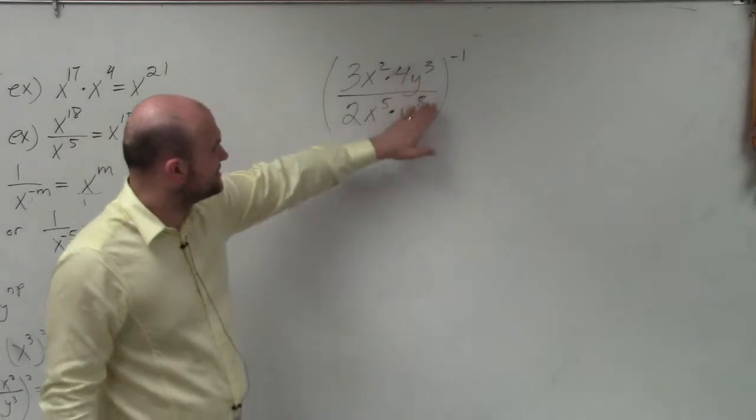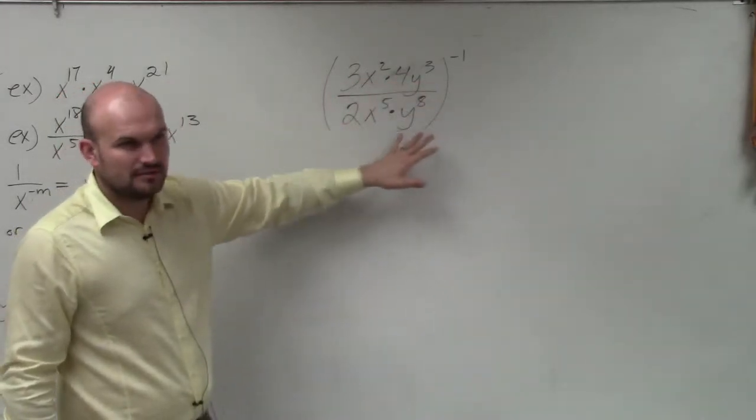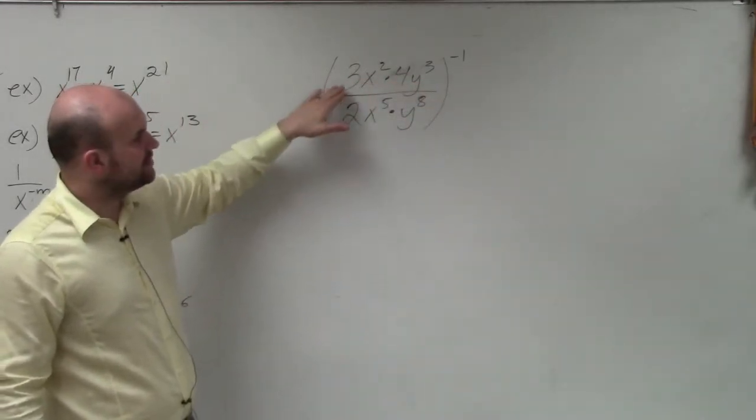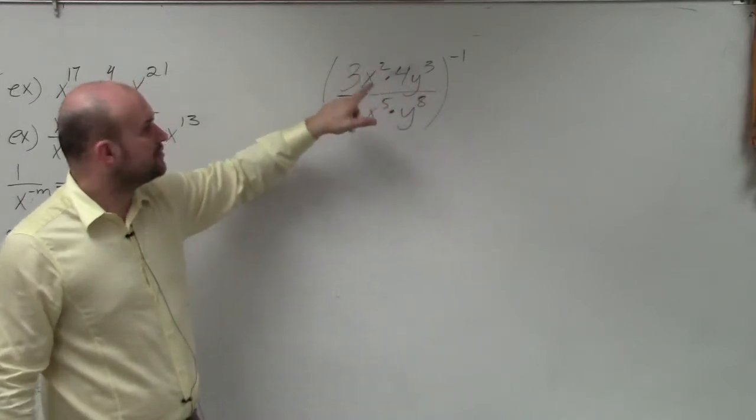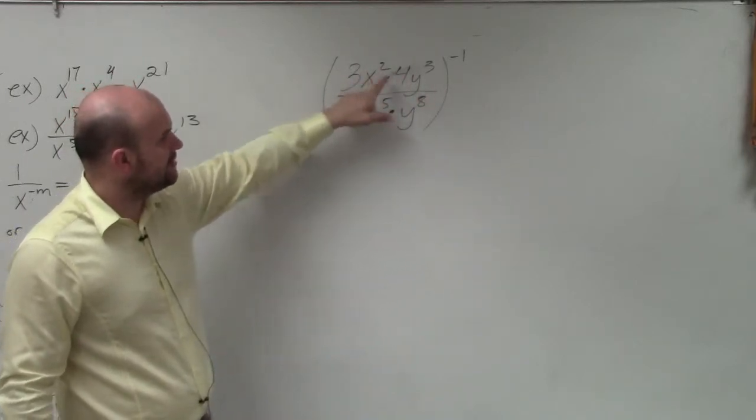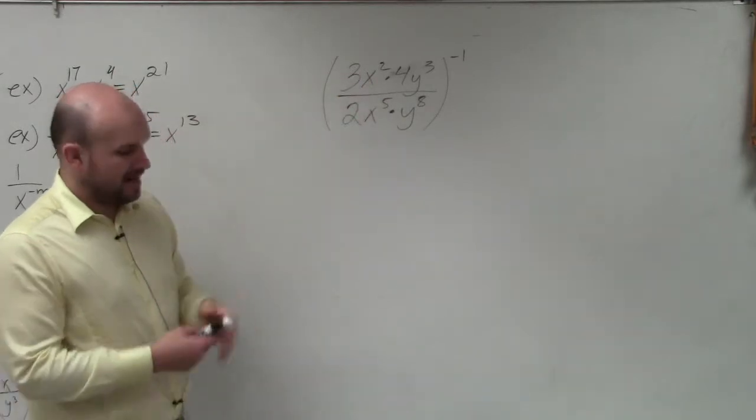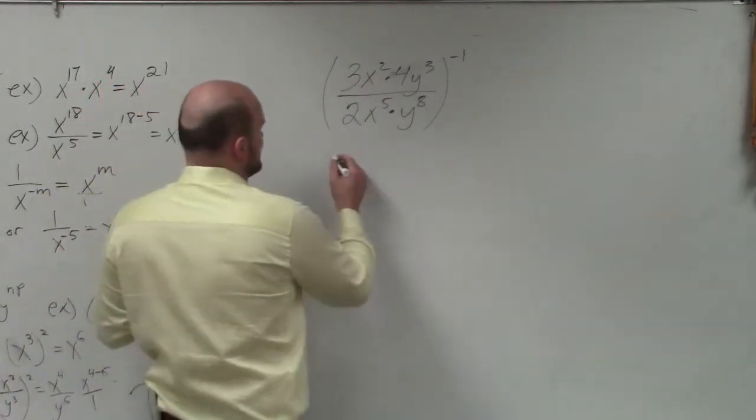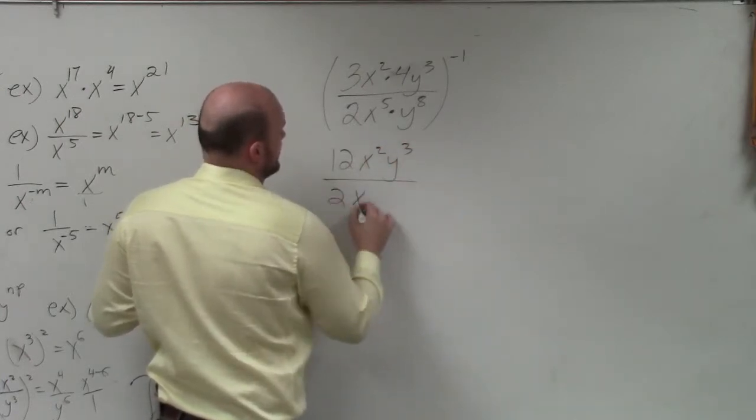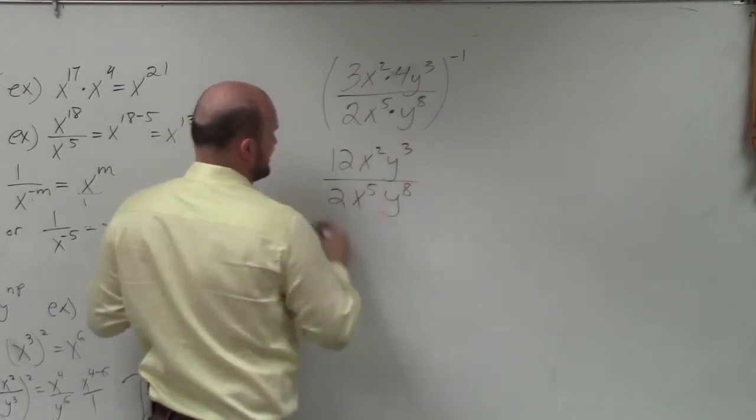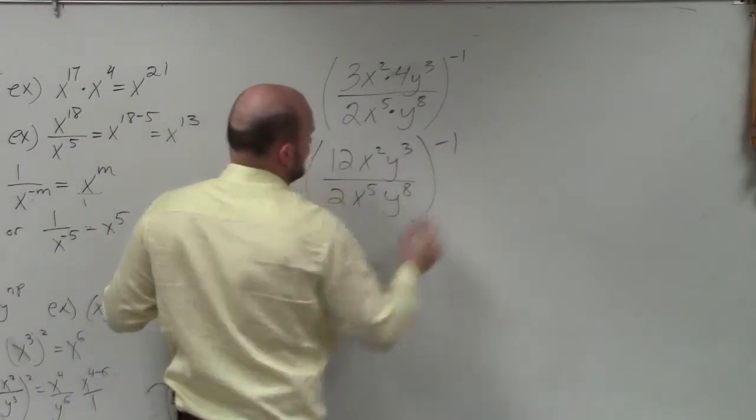So, can I simplify this expression inside here at all? Yeah, the first thing you want to do is always try to simplify the numerator and the denominator. Right now, I can rewrite this as 12 over 6. So, I'll write this as 12 x squared y cubed divided by 2 x to the 5th y to the 8th, divided by negative 1.